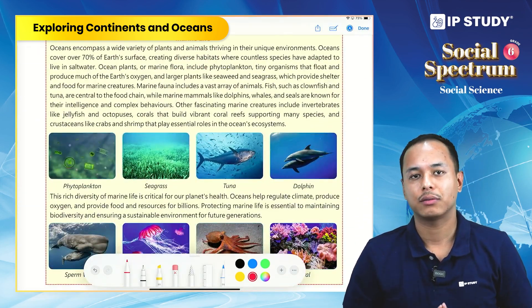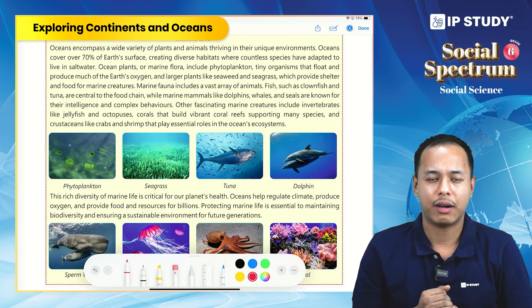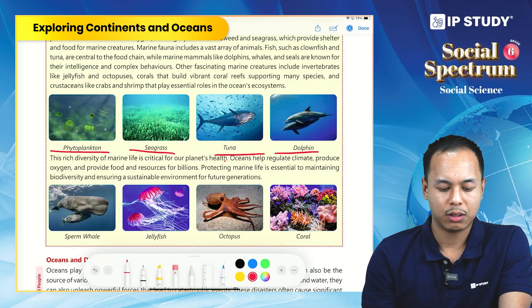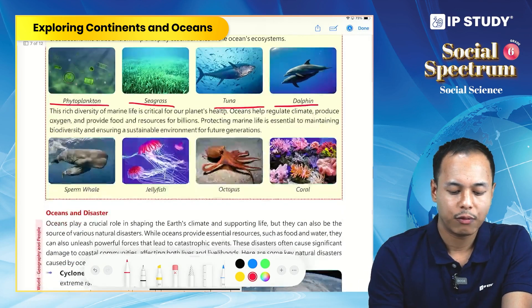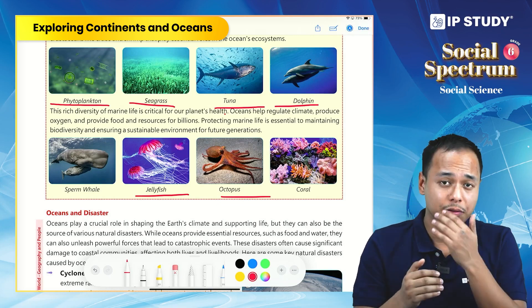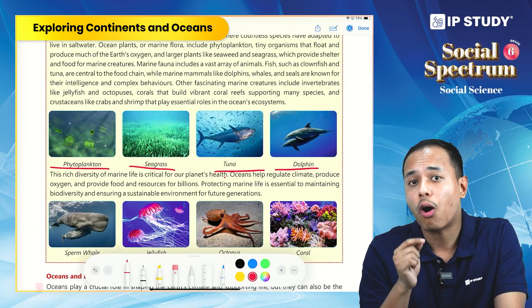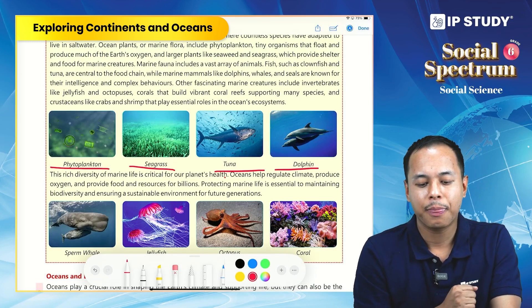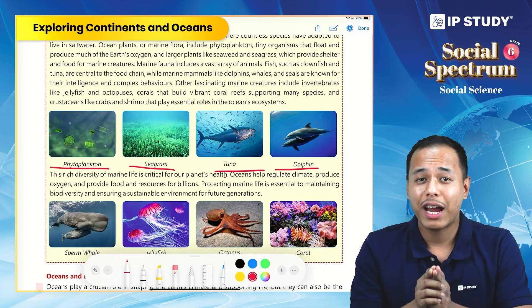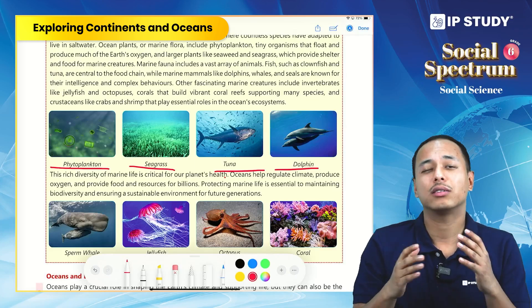Marine life is very important for our survival because we get so many things from it. Some examples include phytoplankton, seagrass, tuna, dolphin, whale, jellyfish, octopus, and coral. Phytoplankton plays a very important role in producing oxygen. We should protect marine life because it provides us with food, oxygen, and other resources, so that future generations can also witness it.